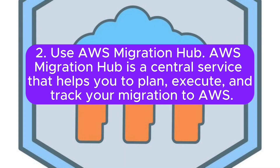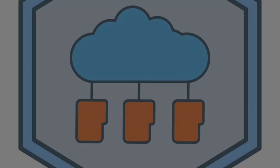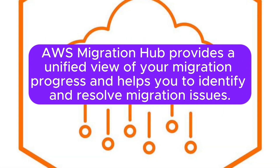Tip 2: Use AWS Migration Hub. AWS Migration Hub is a central service that helps you to plan, execute, and track your migration to AWS. It provides a unified view of your migration progress and helps you to identify and resolve migration issues.